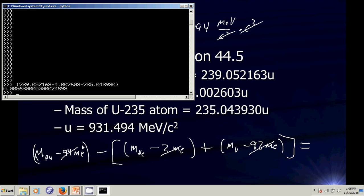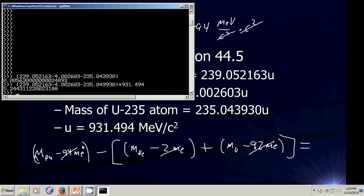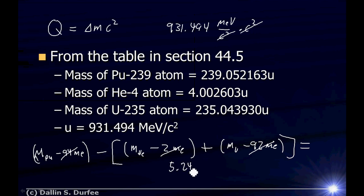I multiply that by C squared to get the energy released. First I convert by multiplying by 931.494 MeV over C squared, and then the C squared cancels, so the energy released is 5.24 MeV. That's how much energy is released when plutonium-239 undergoes alpha decay.